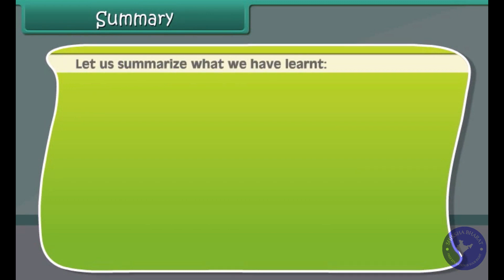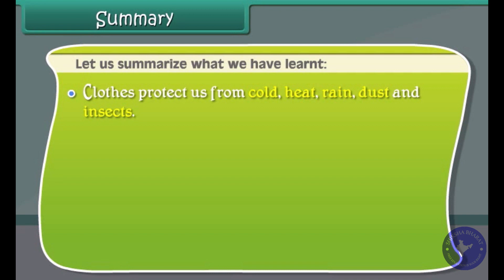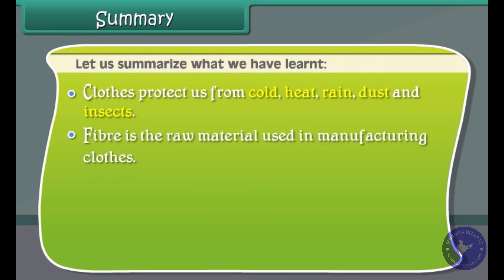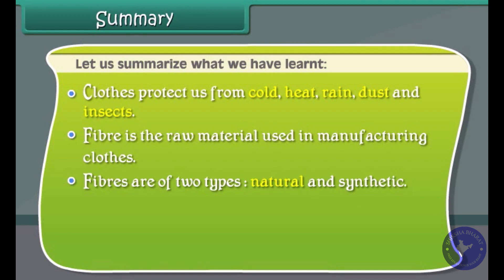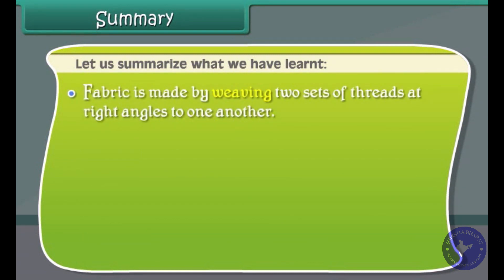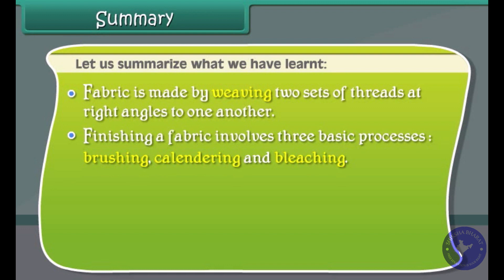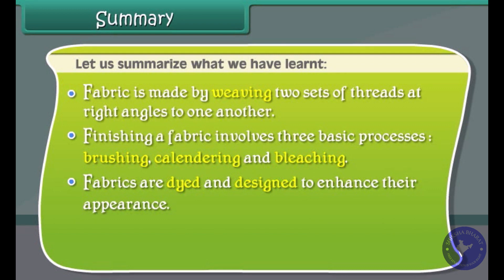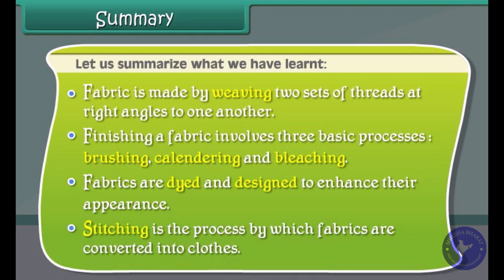Let us summarize what we have learned. Clothes protect us from cold, heat, rain, dust and insects. Fiber is the raw material used in manufacturing clothes. Fibers are of two types: natural and synthetic. Natural fibers are obtained from plants and animals, while synthetic fibers are man-made. Fabric is made by weaving two sets of threads at right angles to one another. Finishing a fabric involves three basic processes: brushing, calendering and bleaching. Fabrics are dyed and designed to enhance their appearance, and stitching is the process by which fabrics are converted into clothes.